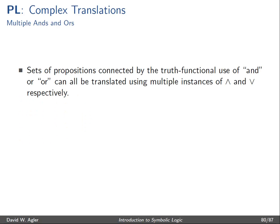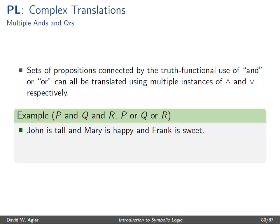So let's get started. Sets of propositions connected by the truth-functional use of 'and' or 'or' can all be translated using multiple instances of the wedge (∧) or v (∨) respectively. For example, to translate 'p and q and r', or a sentence like 'John is tall and Mary is happy and Frank is sweet', we can simply use the wedge operator multiple times with the letter for each proposition we want to represent.